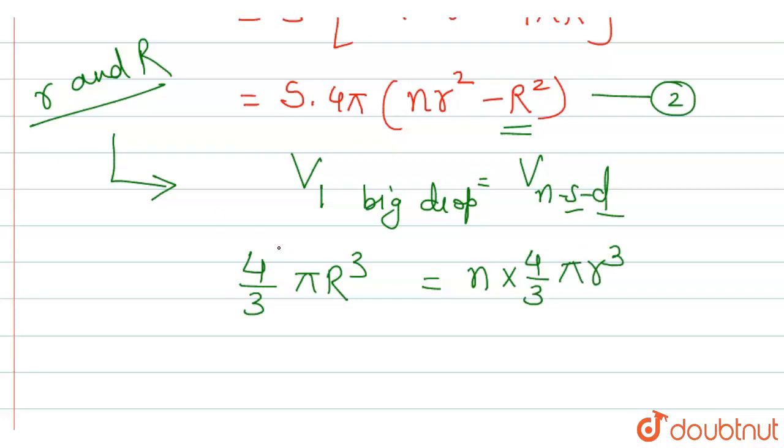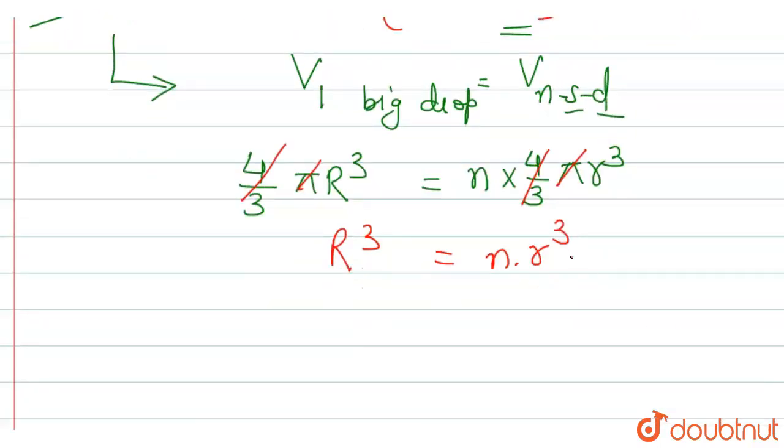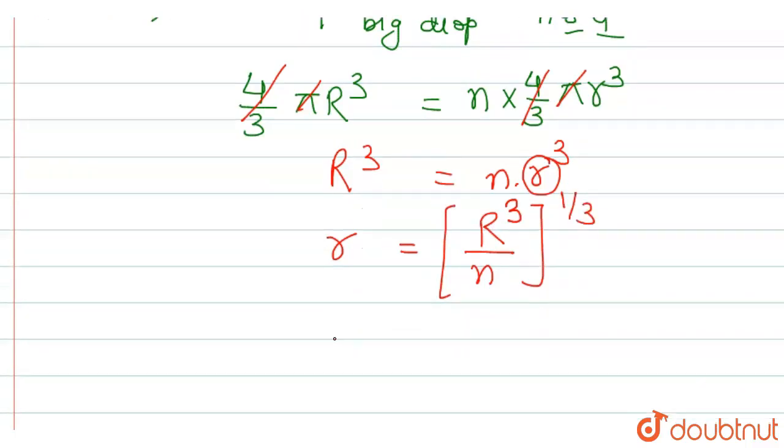Certain things cut down like 4 by 3 pi. We get R cube is equal to n into small r cube. Hence, we can find the value of this small r. This is small r equals to R by n and this is the cube root. If I write the original expression, this is r cube by n and its whole cube root. We can express that small r is equal to capital R divided by the cube root of n. This is equation number 3 for us.